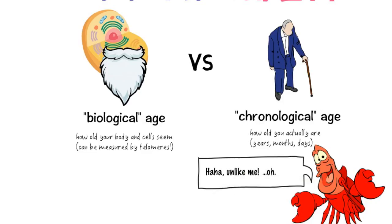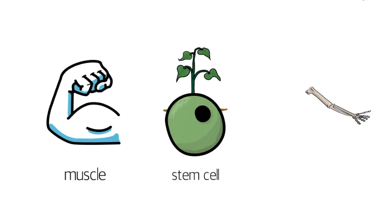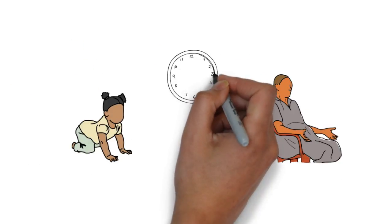Once your cells reach this limit, they begin to malfunction and cause tissue, stem cell, and bone degeneration. As you can imagine, telomeres are a huge part of current research on aging.